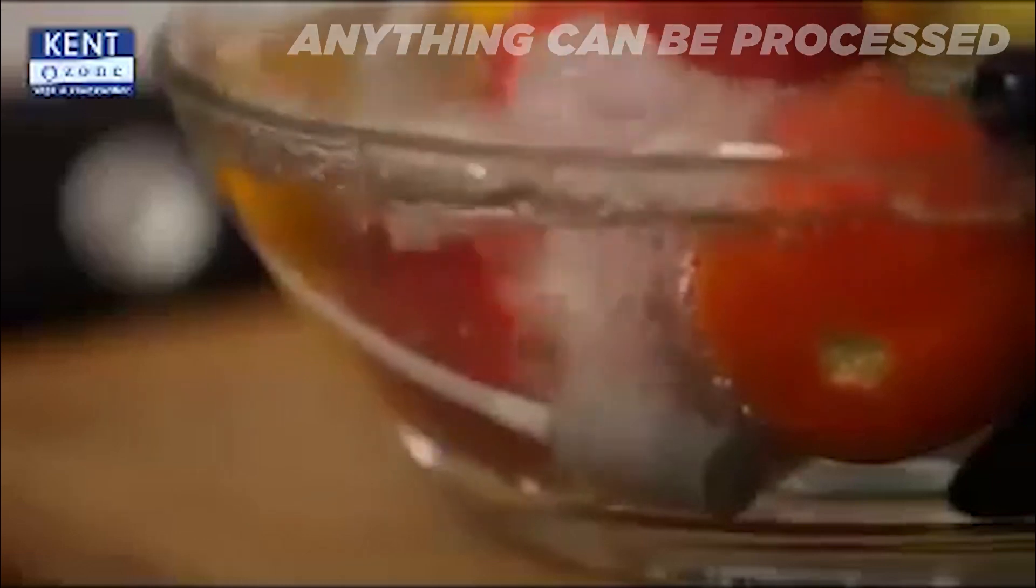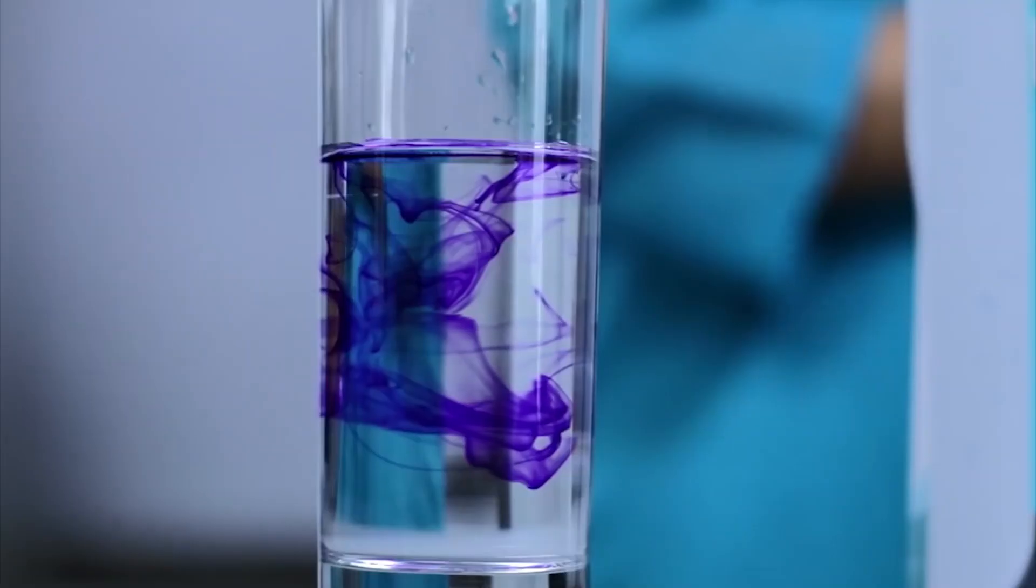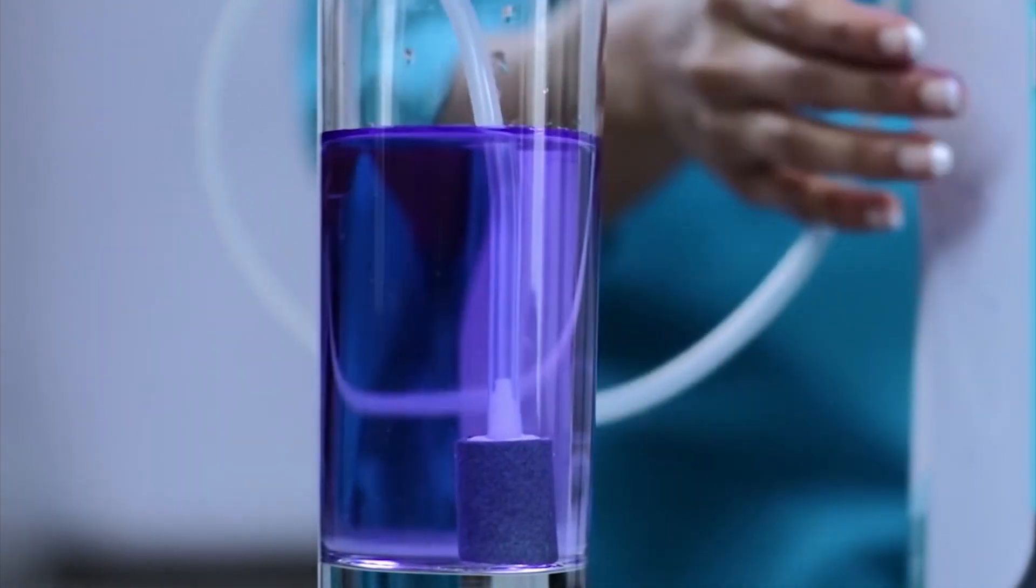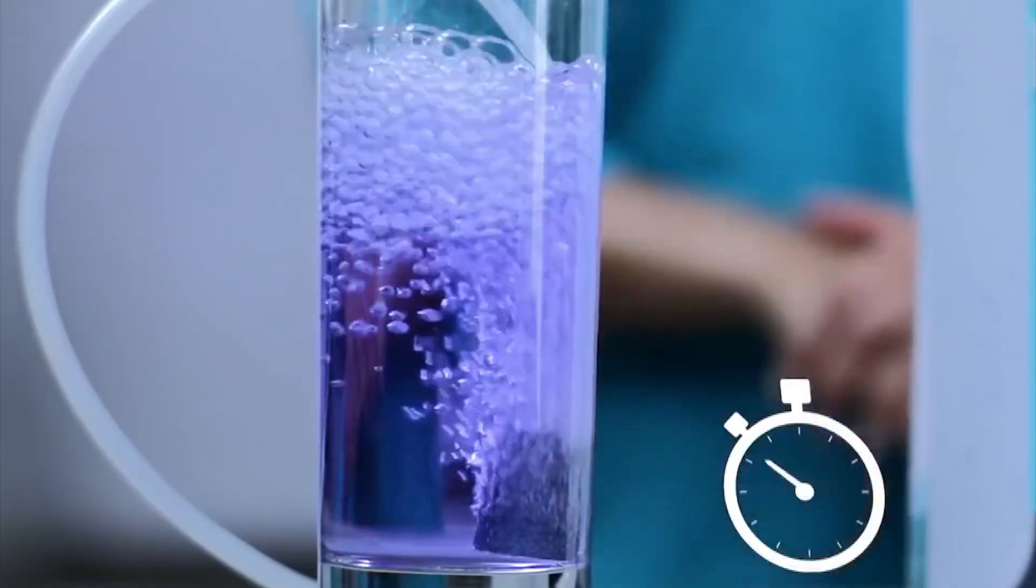You can clean fruits, vegetables, fish, and other items. Put them in a bowl, set the timer for 5 minutes, and it will clean them.